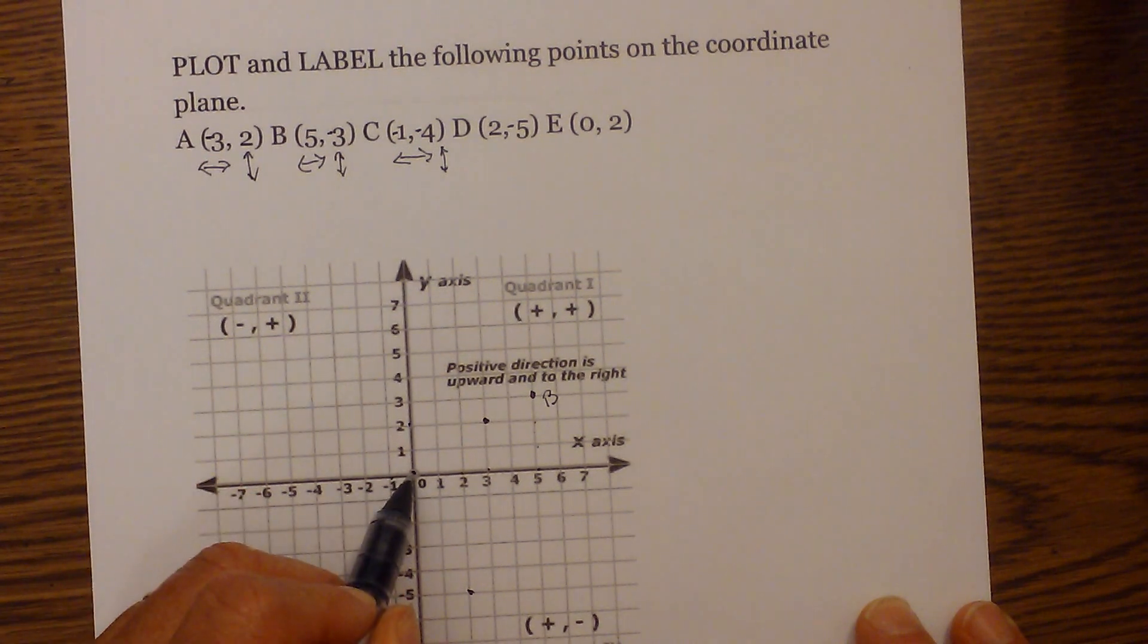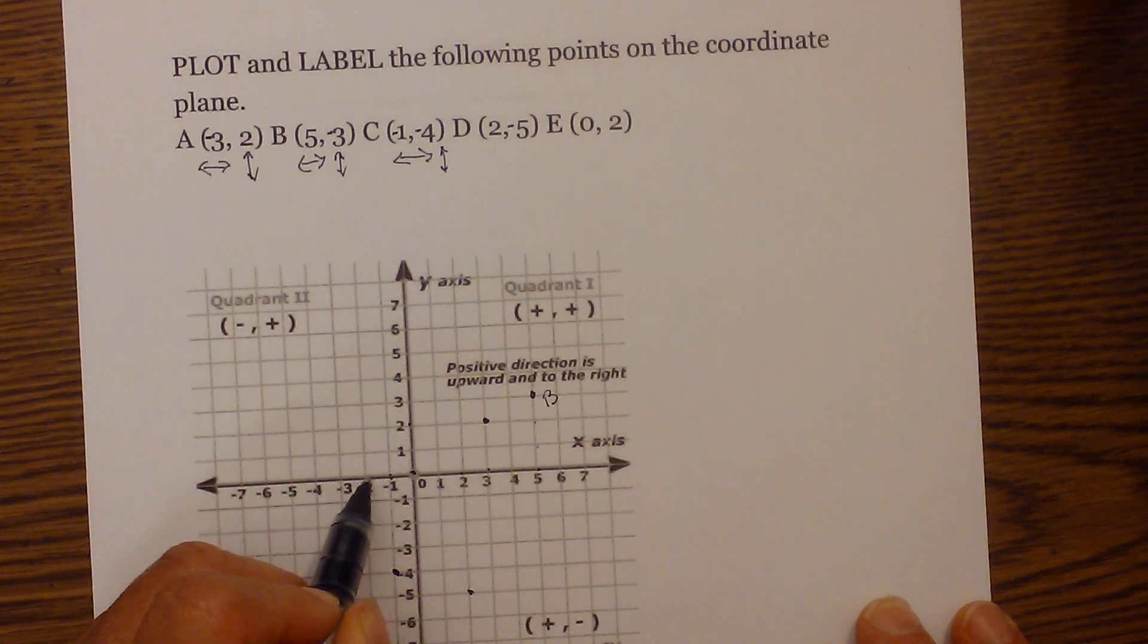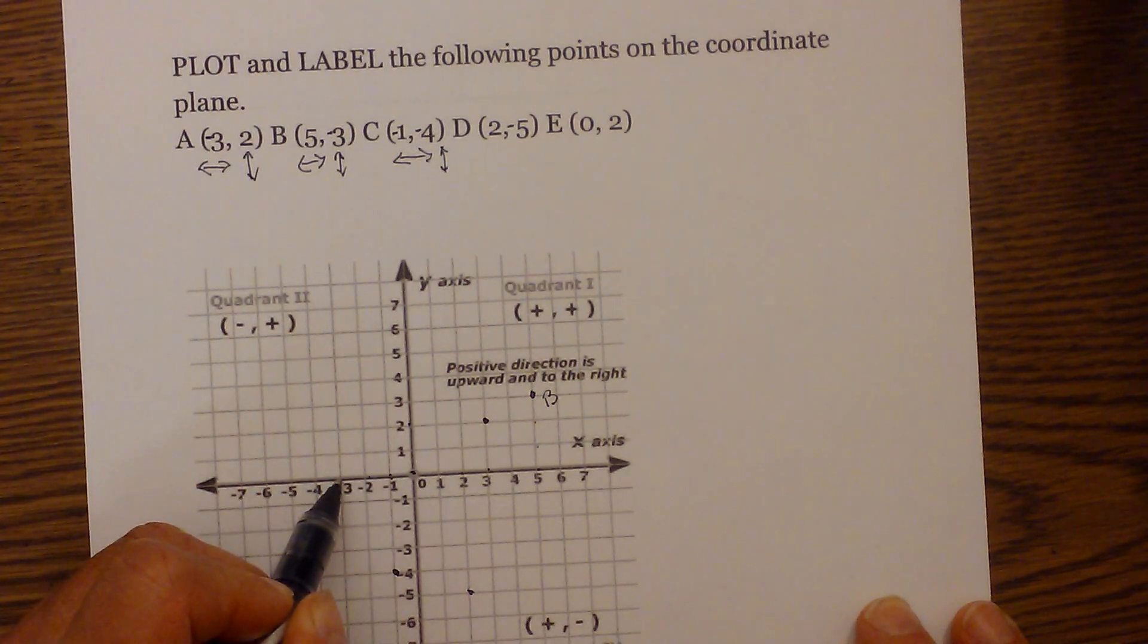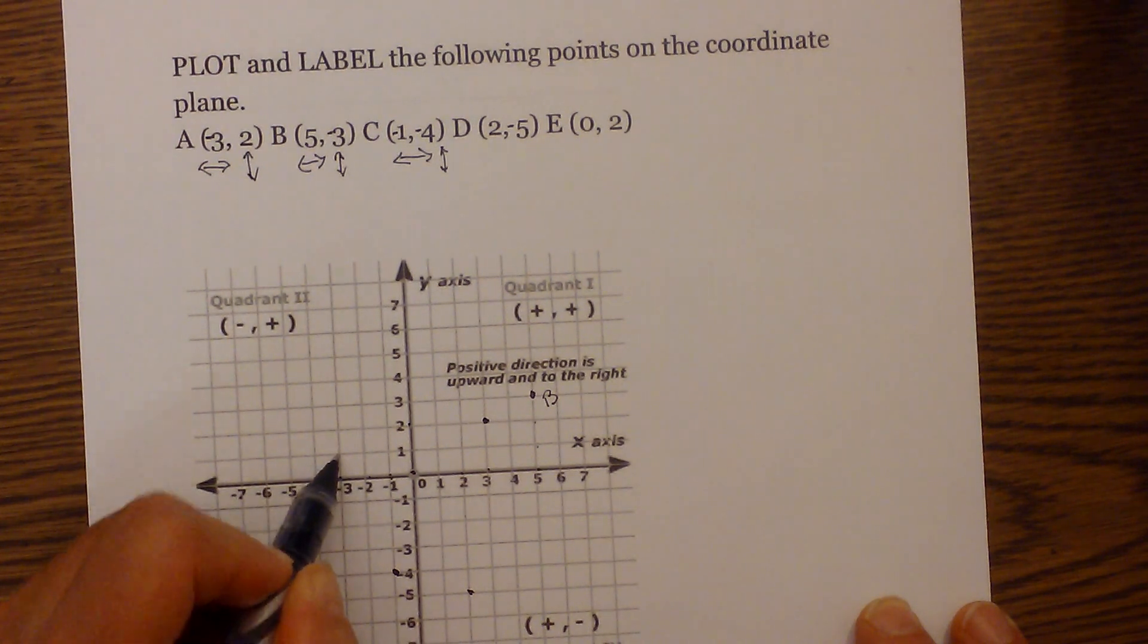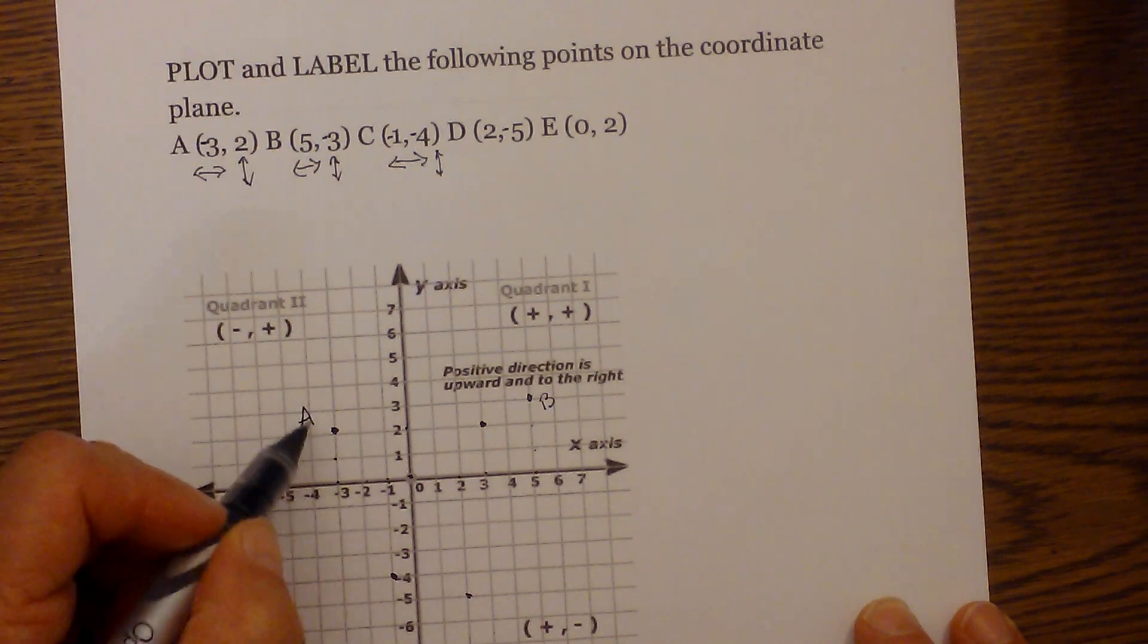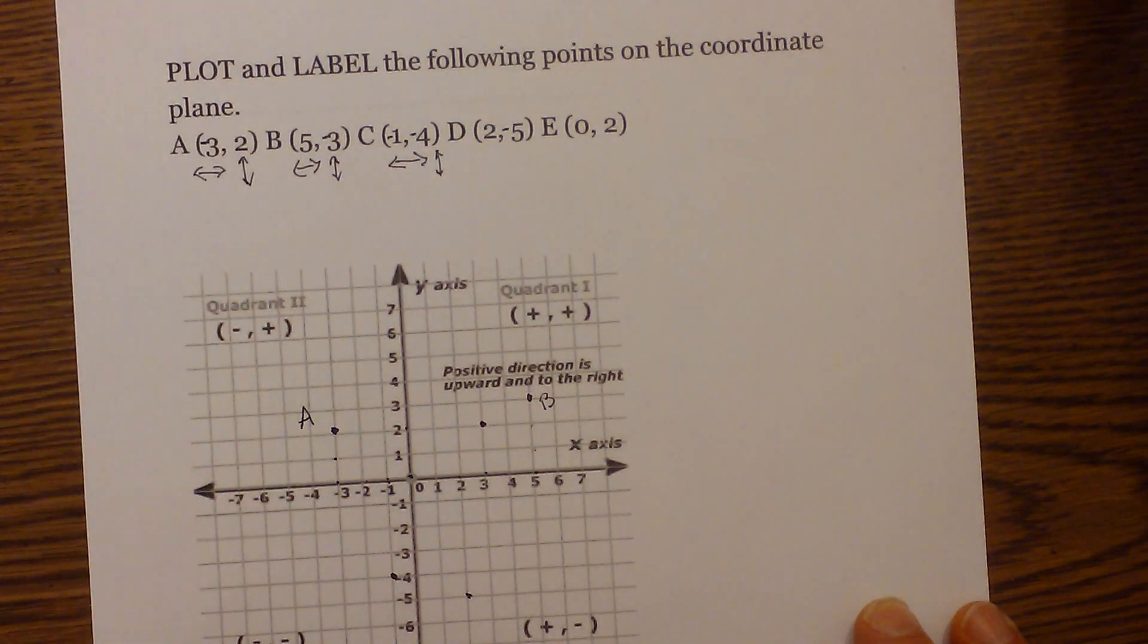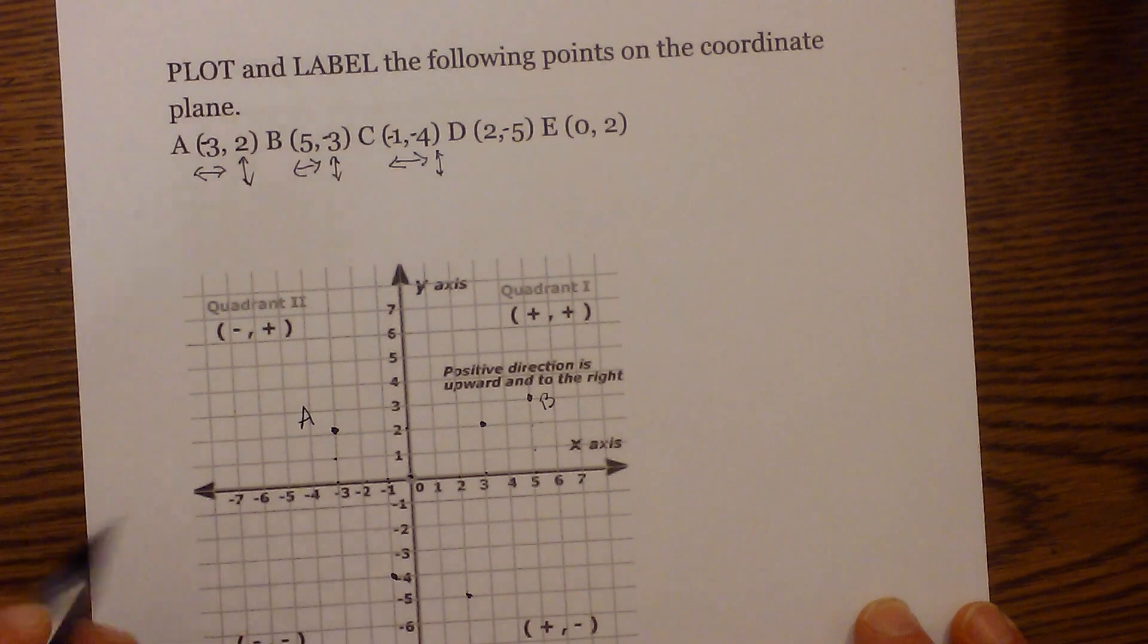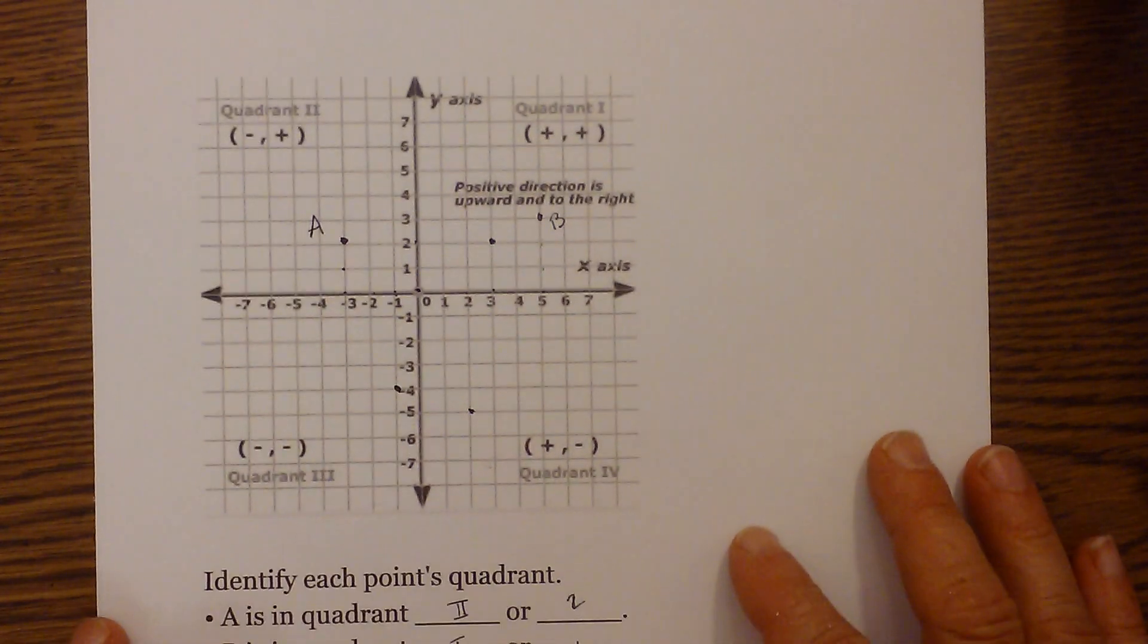So we're going to start at negative three. We're going to go one, two, three to the left and up one, two, and that gives you point A, and it is going to be in quadrant two.